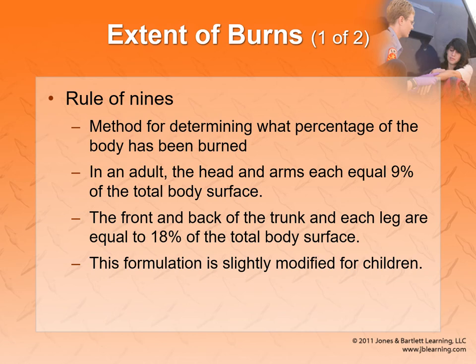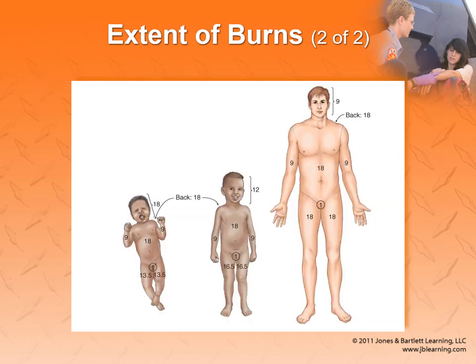The Rule of Nines is critical — this will definitely be on the test. The entire leg is 18%. The entire arm is 9%. The head is 9%. The chest and abdomen area together is 18% — you can divide it as 9% for the chest and 9% for the stomach, same for the back. You can subdivide further: if someone burns half their arm, that's 4.5%. The proportions are slightly different for babies, but for testing purposes focus on the adult chart. Memorize the Rule of Nines.